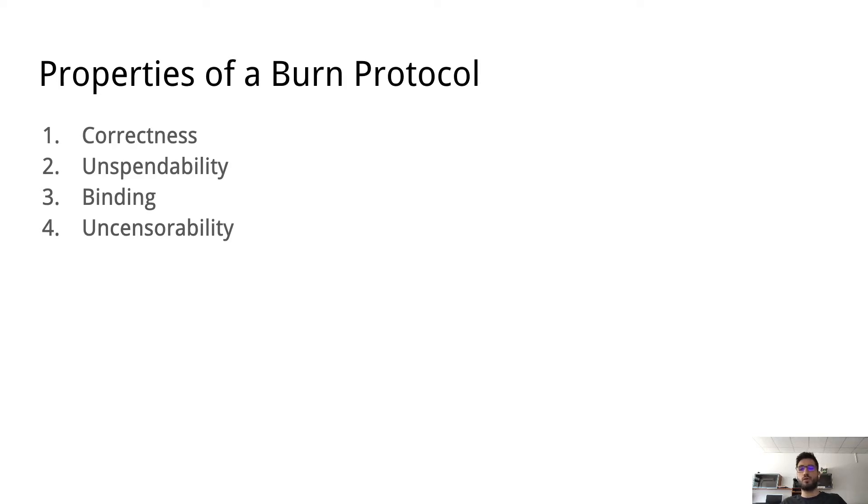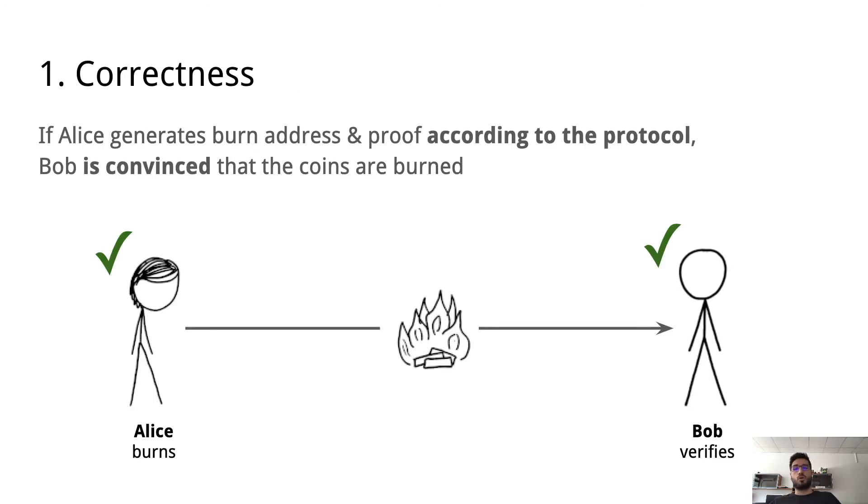Now let's look at the properties of the burn protocol. We have correctness, unspendability, binding, and uncensorability, and we defined this formally. Correctness basically says that if we have Alice and she burns and she does so according to the protocol, then Bob will have to be convinced that she actually burned. This is a pretty basic condition.